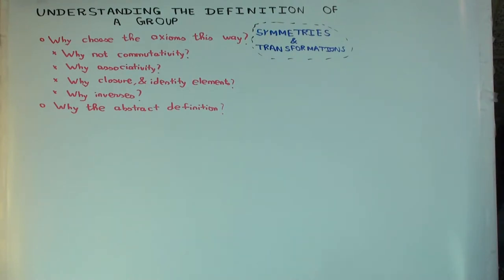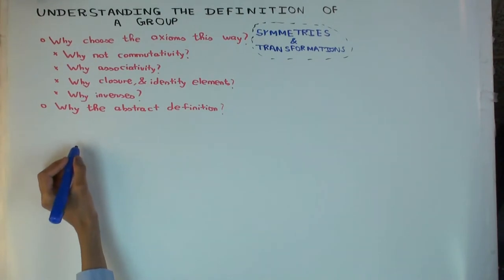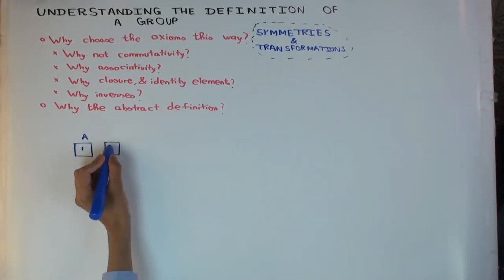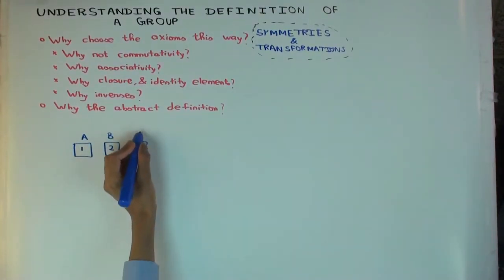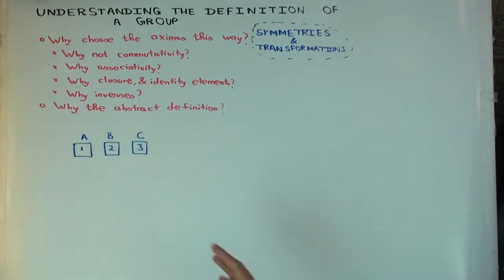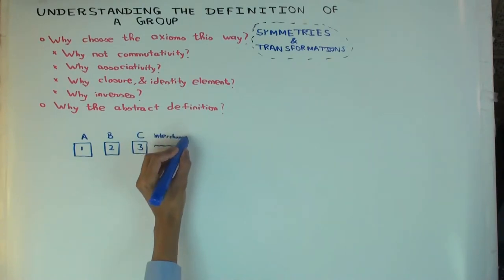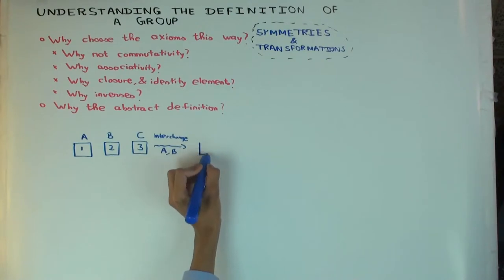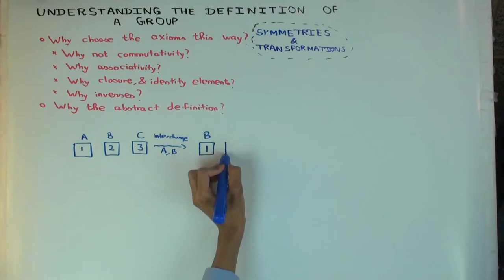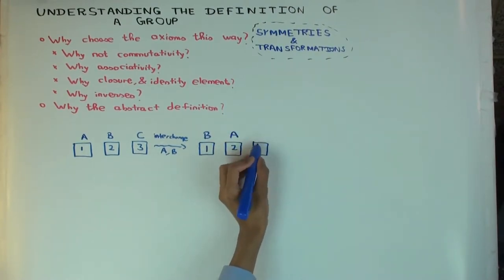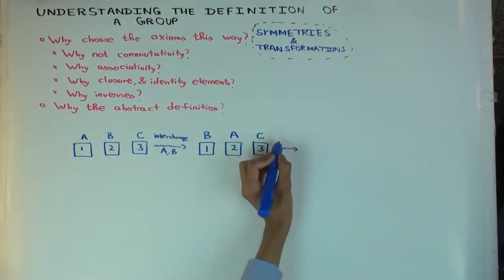Let me take a small example. Say you have three boxes: box one labeled A, box two labeled B, and box three labeled C. Now I can do various symmetries which involve changing the labels on these boxes. One symmetry I can do is interchange labels A and B. So box one gets B, box two gets A, and box three stays C.